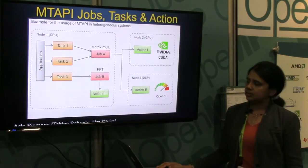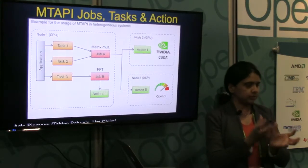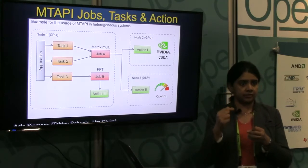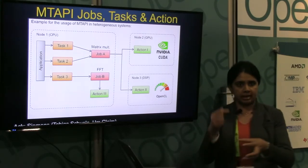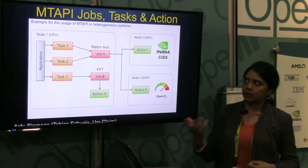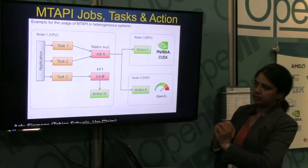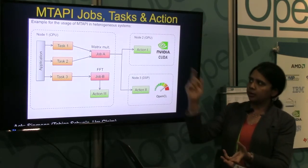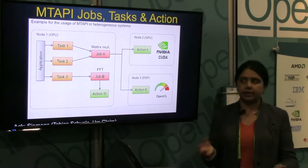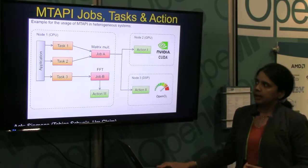In MTAPI, just like OpenMP has tasks, the concept is called jobs — different vocabulary but conceptually similar. Every job can be associated with different actions: an action going to the CPU, another to the GPU, another to the DSP. This picture borrowed from Siemens Germany shows plugins for CUDA and OpenCL, where the idea is to use OpenCL and CUDA from MTAPI. There are different translation layers between OpenMP and the hardware, with scheduling occurring throughout.